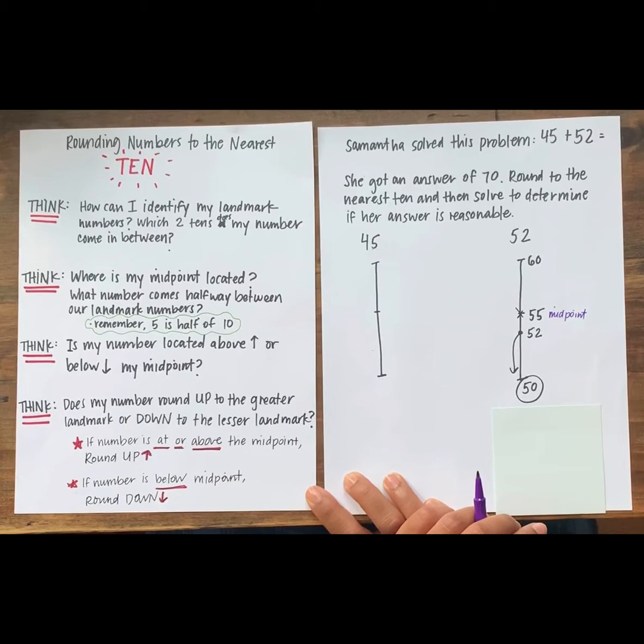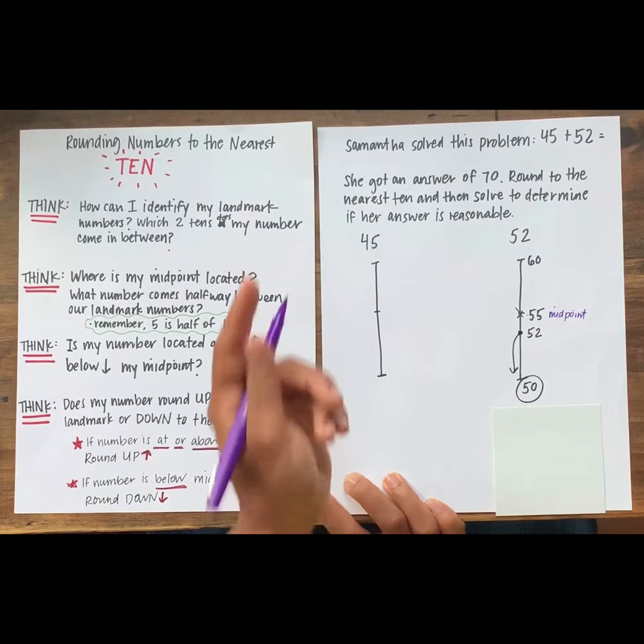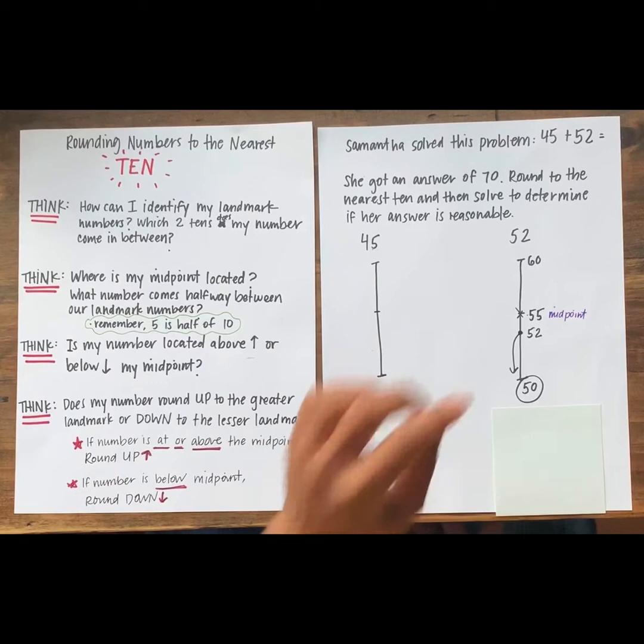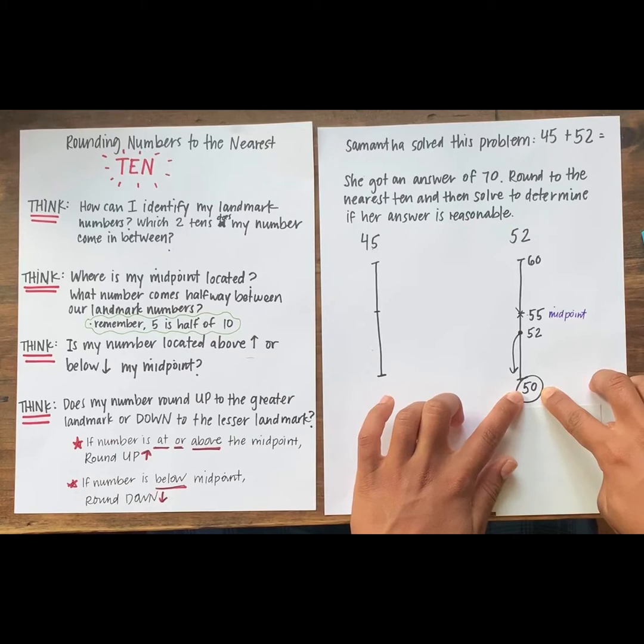What did the student do next? Yes, they thought, is my number located above or below my midpoint? 52 is less than 55, so it's located right below. So does 52 round to 50 or 60? And why? Say your answer out loud. Yes, great job. 52 rounds down to 50 because we can see it's below the midpoint. So it's closer to 50.